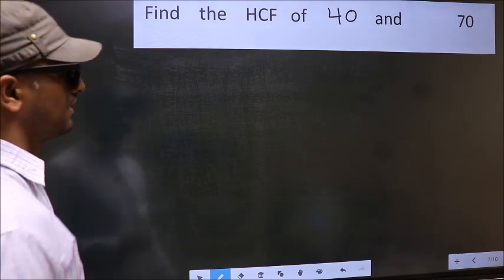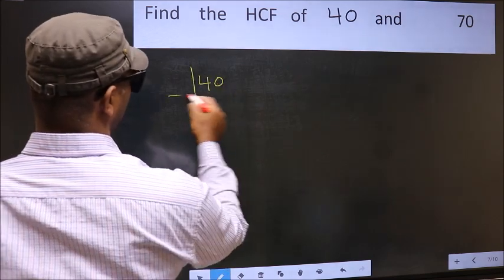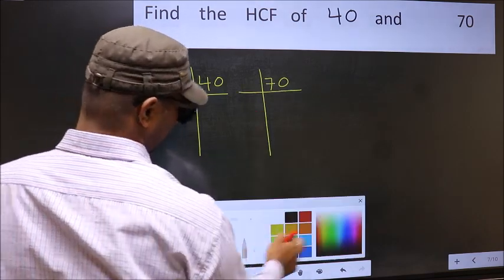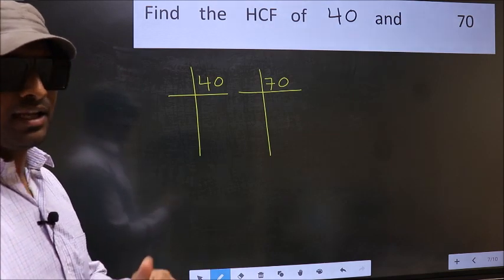What I mean is 40 and 70. This is your step 1. Next.